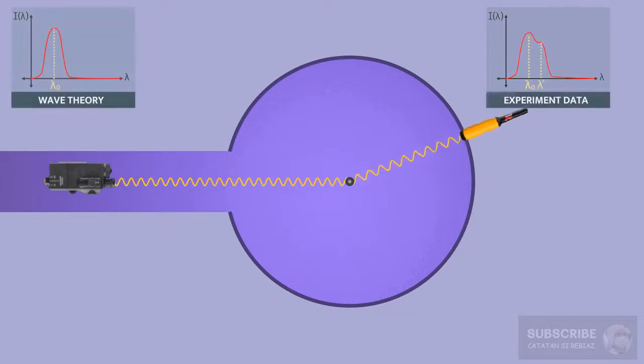If you compare the wave theory of light and the experimental results, it turns out that they don't match. In other words, the wave theory of light cannot explain the experimental results of X-ray scattering.